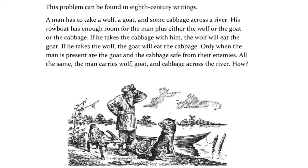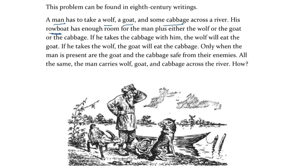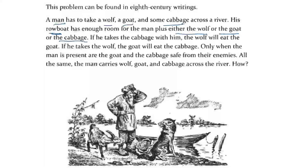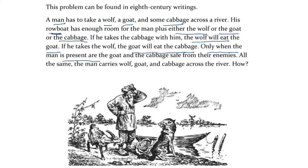So we have a man, and he has a really odd task. He has to take a wolf, a goat, and cabbage across a river. However, his rowboat has enough room for the man himself plus either the wolf or the goat or the cabbage. If he takes cabbage with him, the wolf is going to eat the goat. If he takes the wolf, the goat is going to eat the cabbage. Only when this man is present are the goat and the cabbage safe from their enemies.